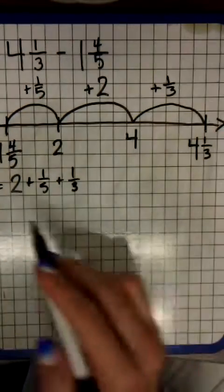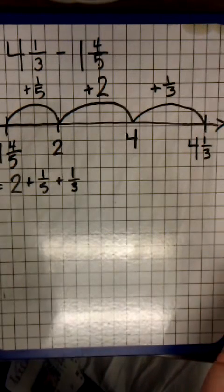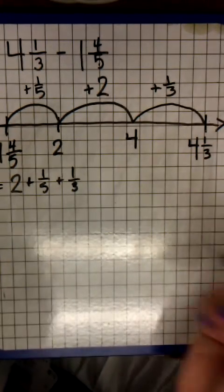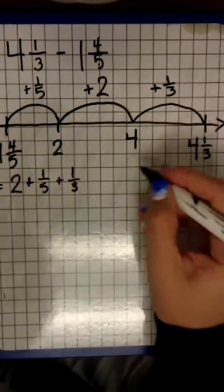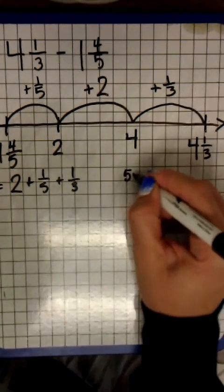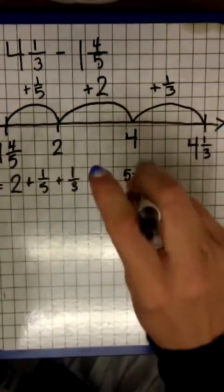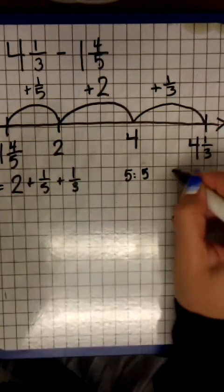My denominators are not the same, so I need to convert both of them to have like denominators. I had done my bubble method in another step, but I'll show you again. If you didn't already know that the common denominator is fifteen, you would do the bubble method.